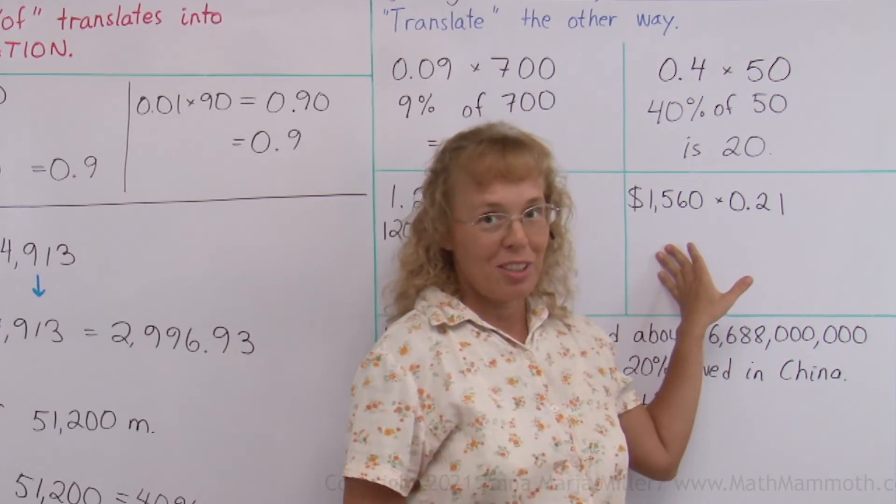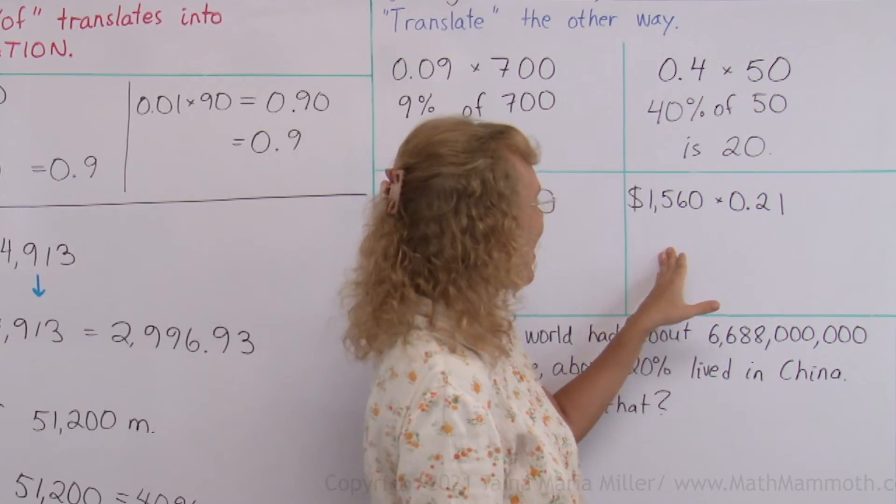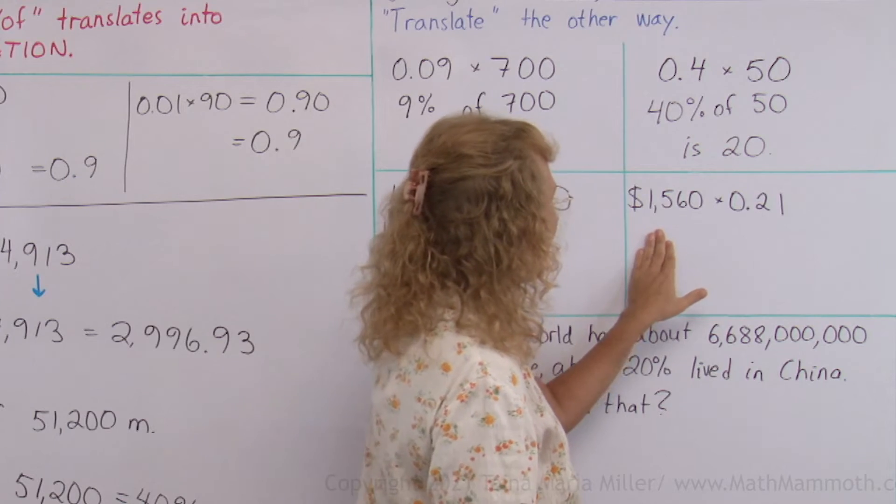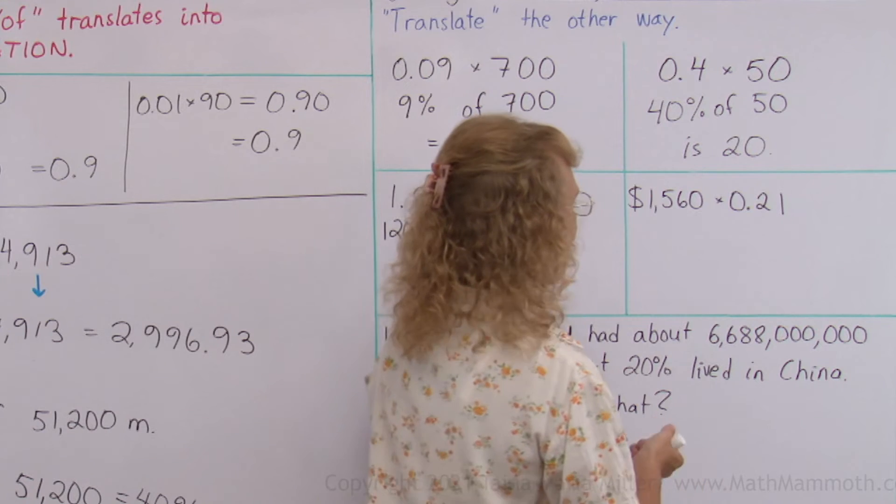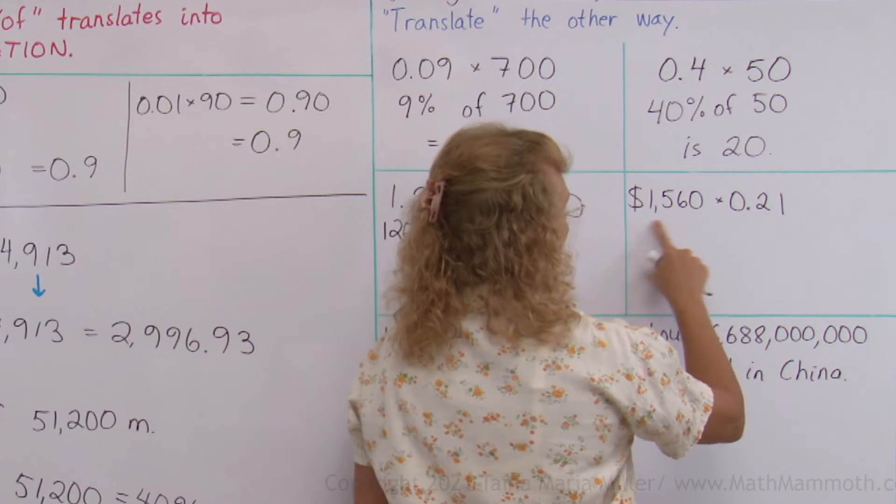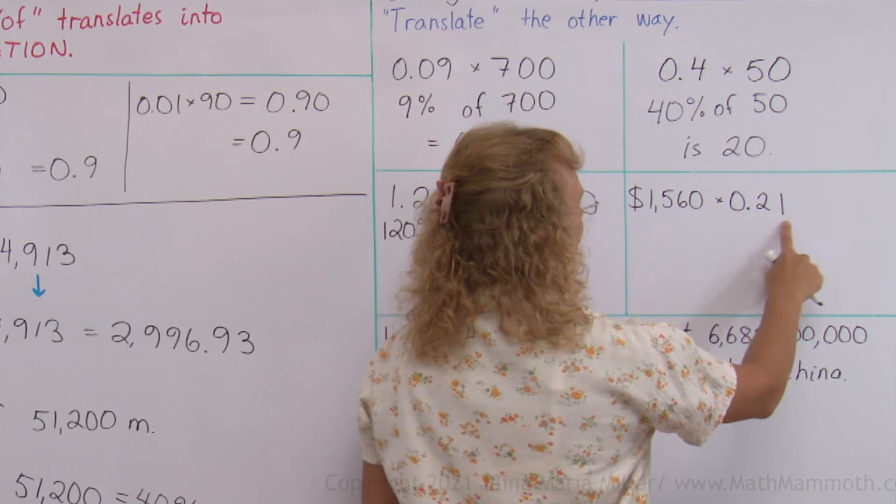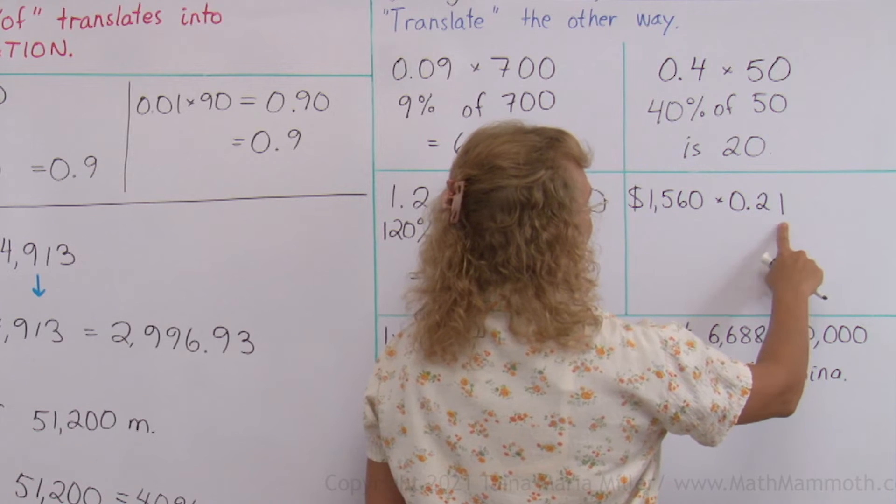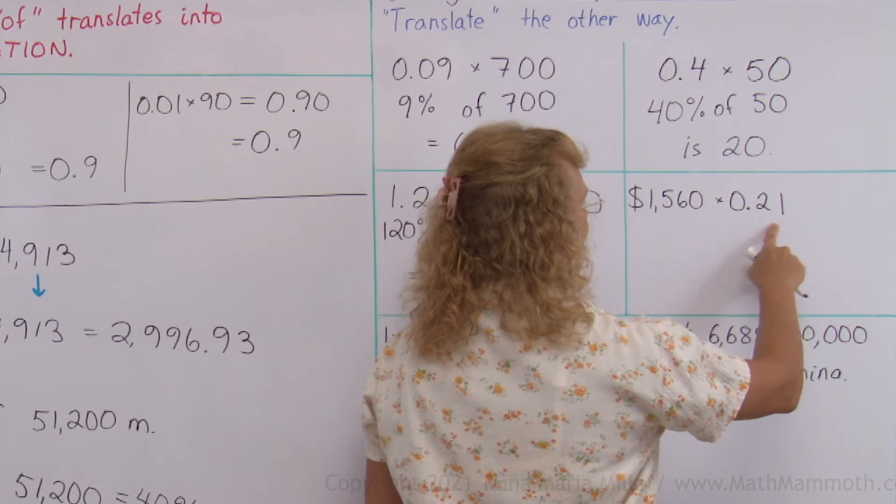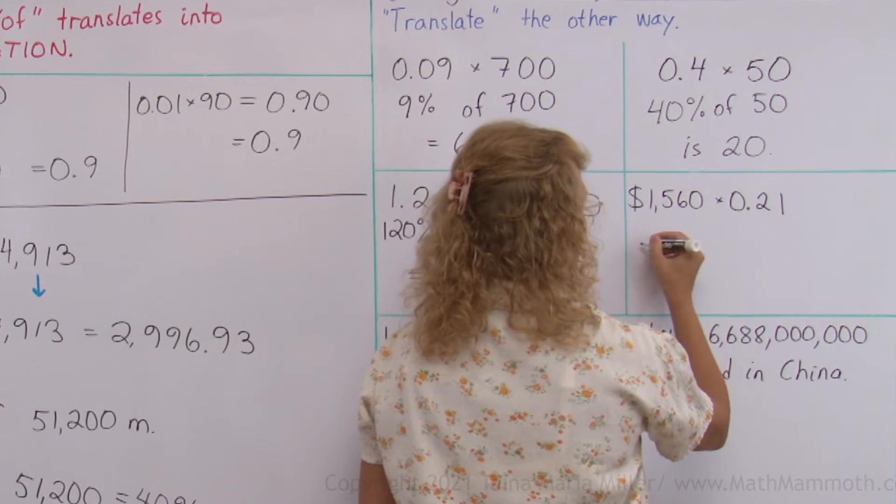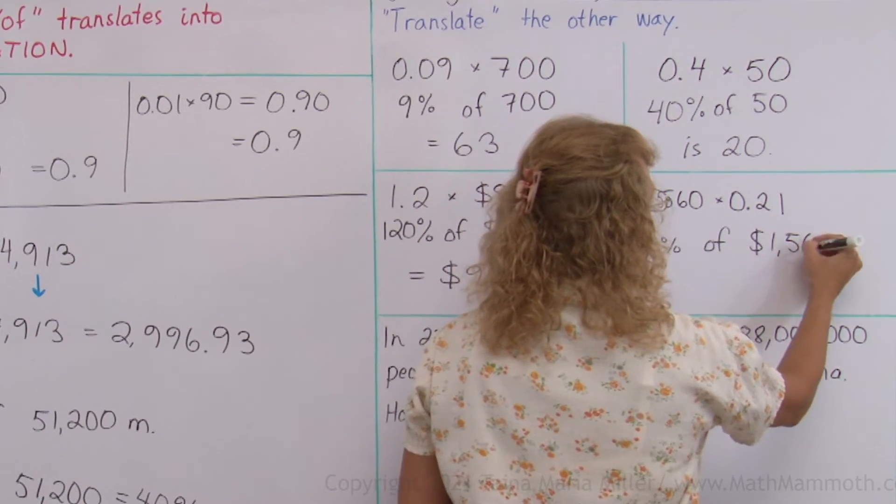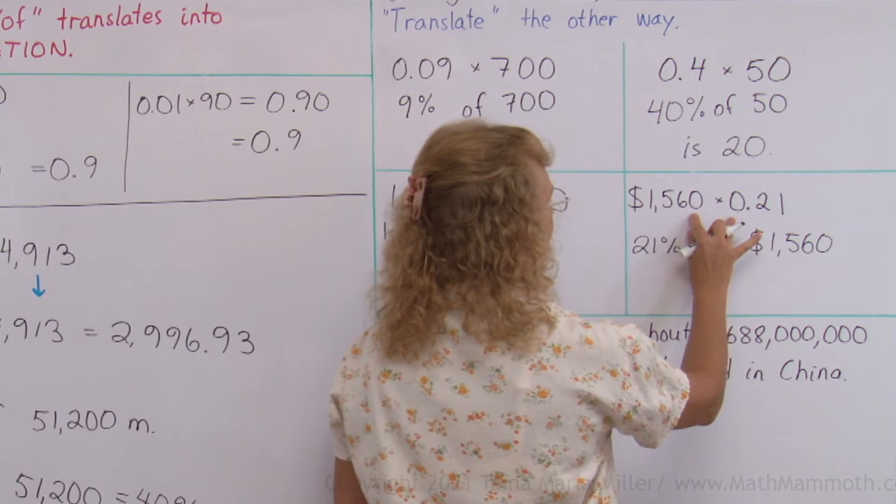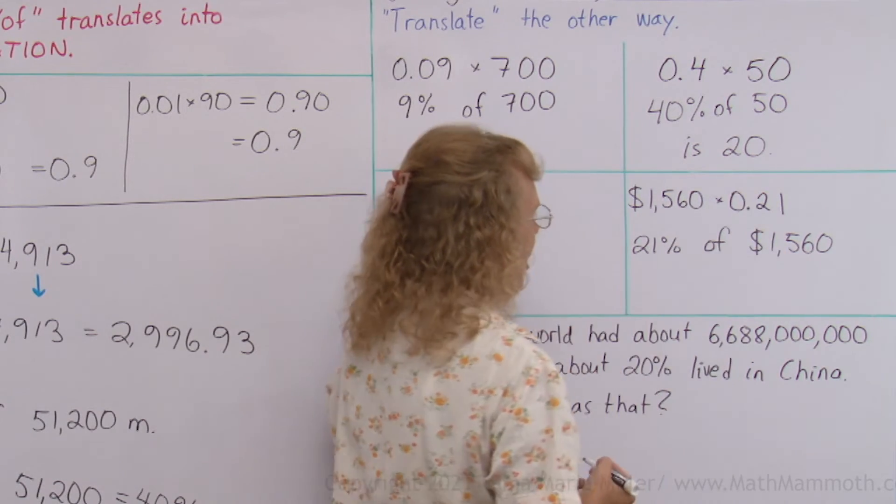Over here we're surely going to use the calculator again. But let's translate it back into percentage of something. Can you see how? This time our quantities here, the decimal 0.21 is 21 hundredths. So this is going to be our percentage, 21%. And I can do that because if I multiply numbers, I can always switch the order of multiplication.